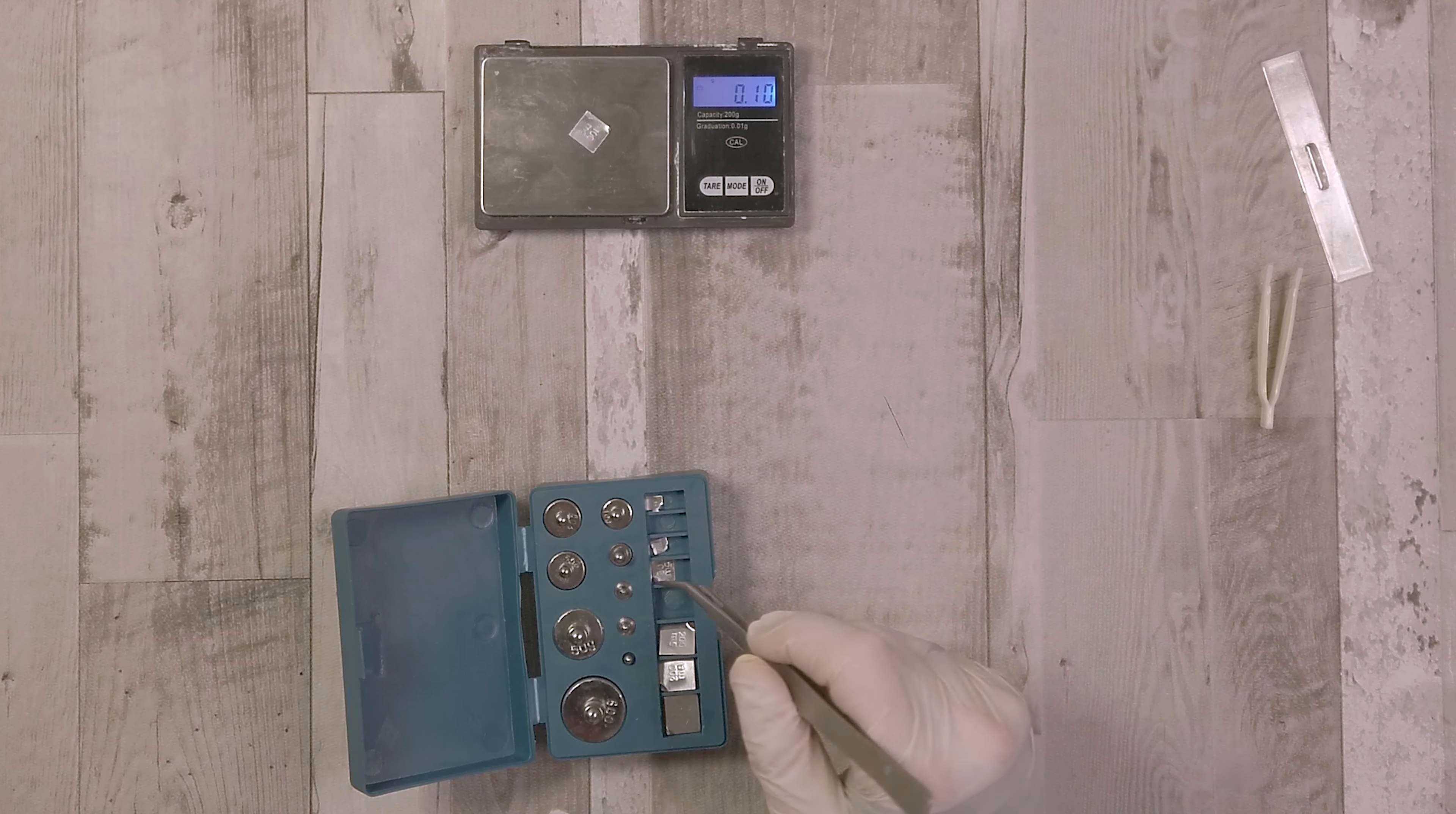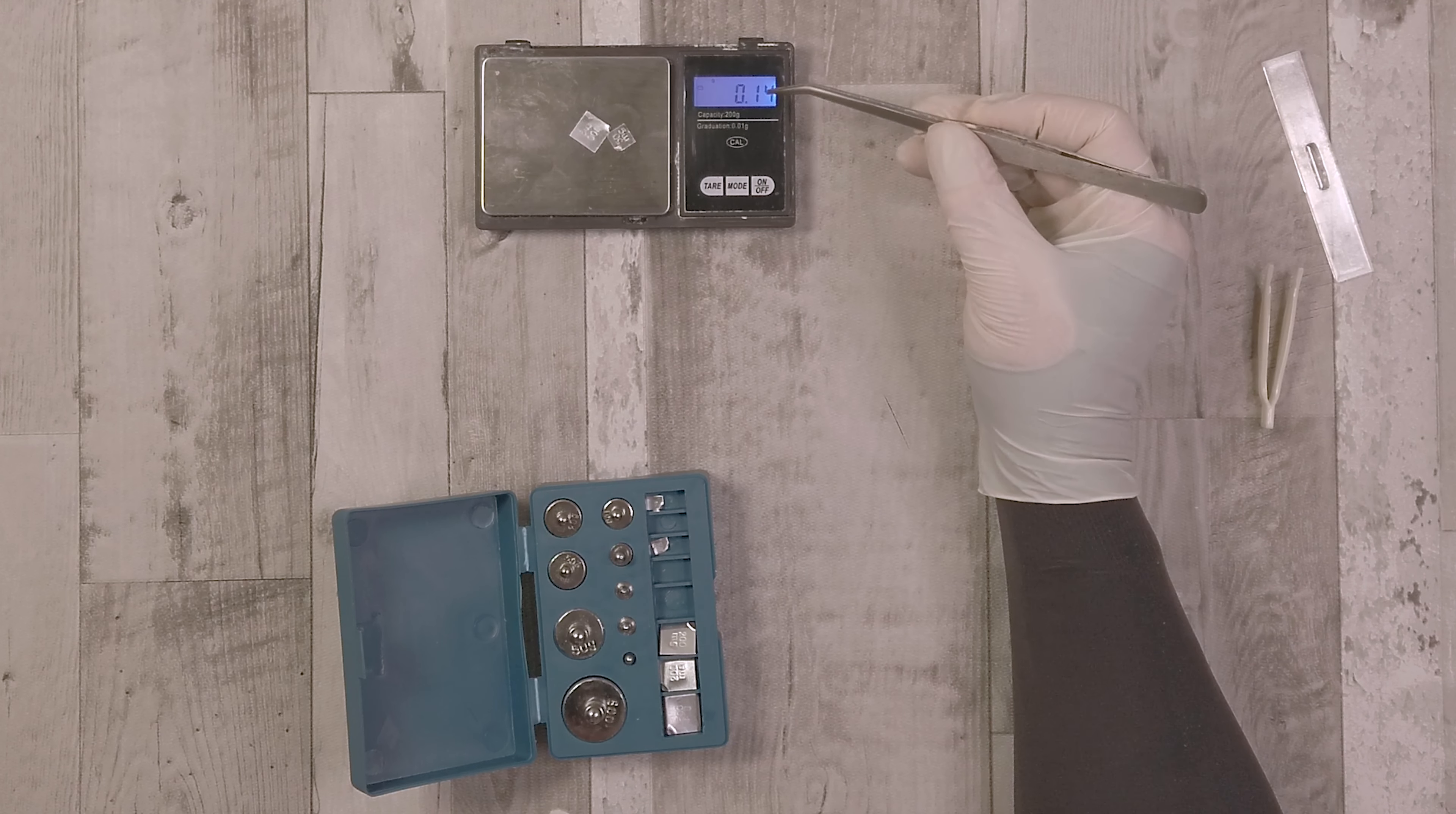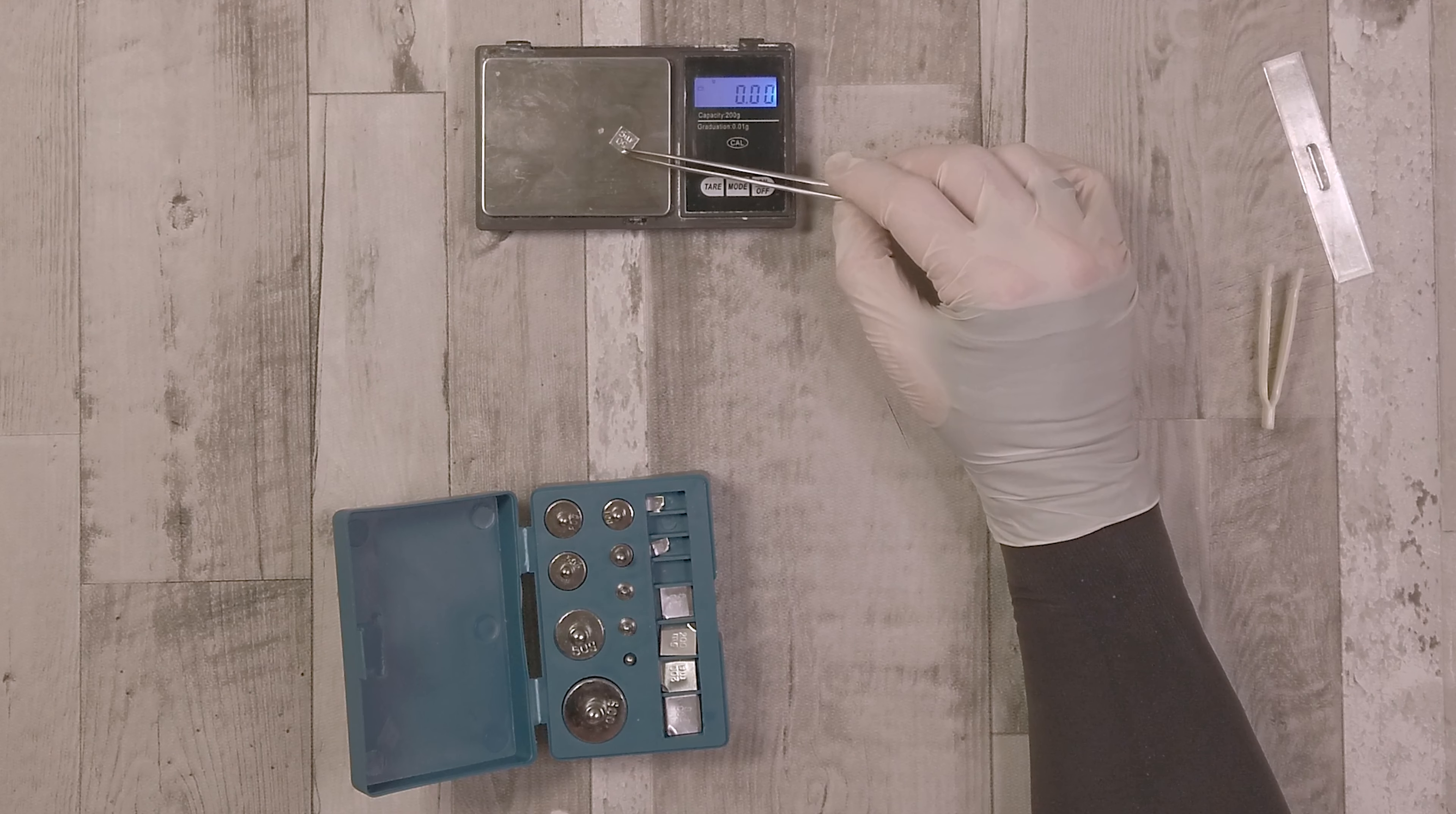So that's how you can make sure that your scales are calibrated and are pretty accurate. Again this is not foolproof. If you damage any of these weights, you drop them and pieces nick off, they're going to change weights. You have to be fairly careful with them. But for a home soaper who just wants to make sure their scales are fairly accurate, this is a brilliant way of doing it.